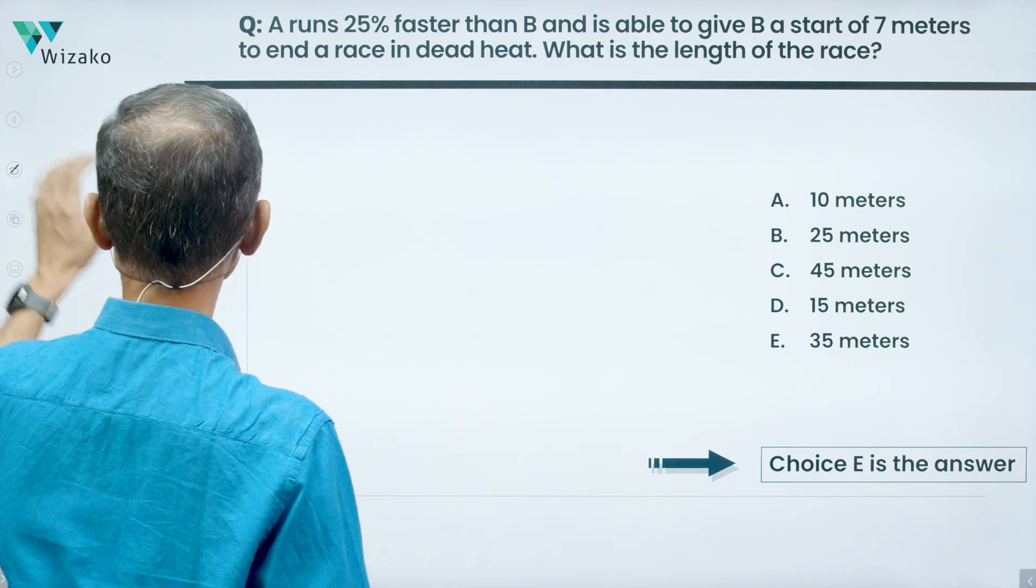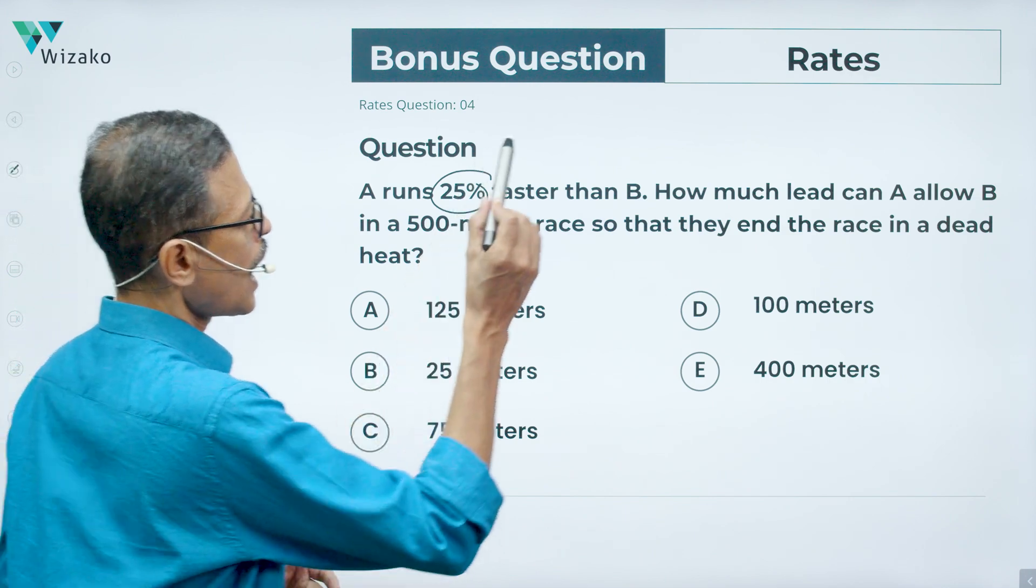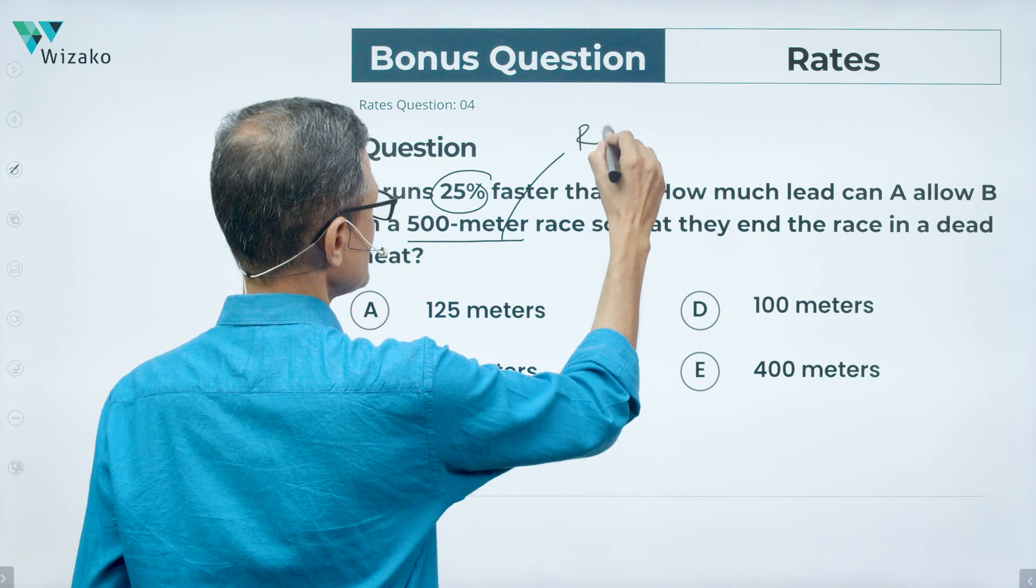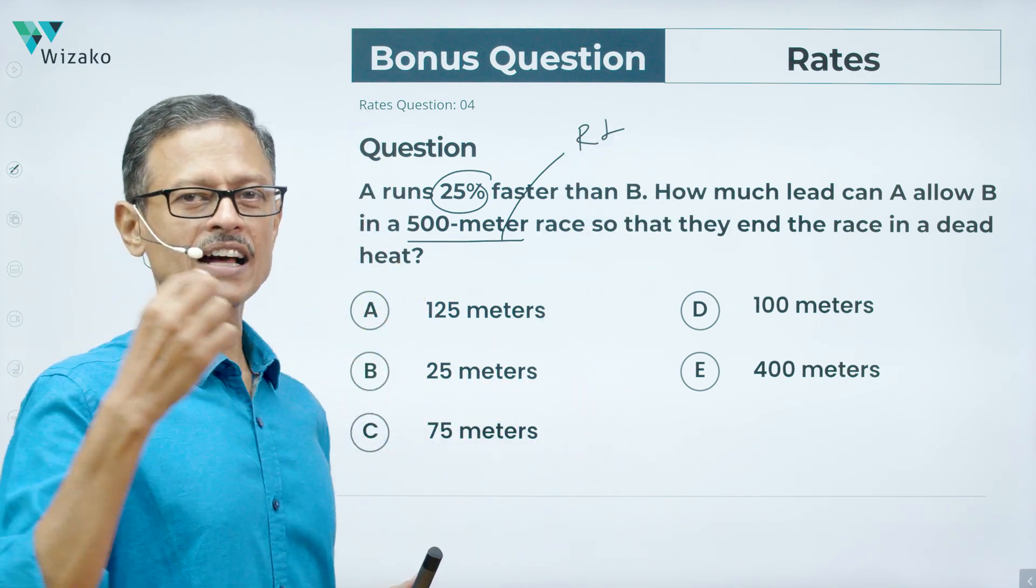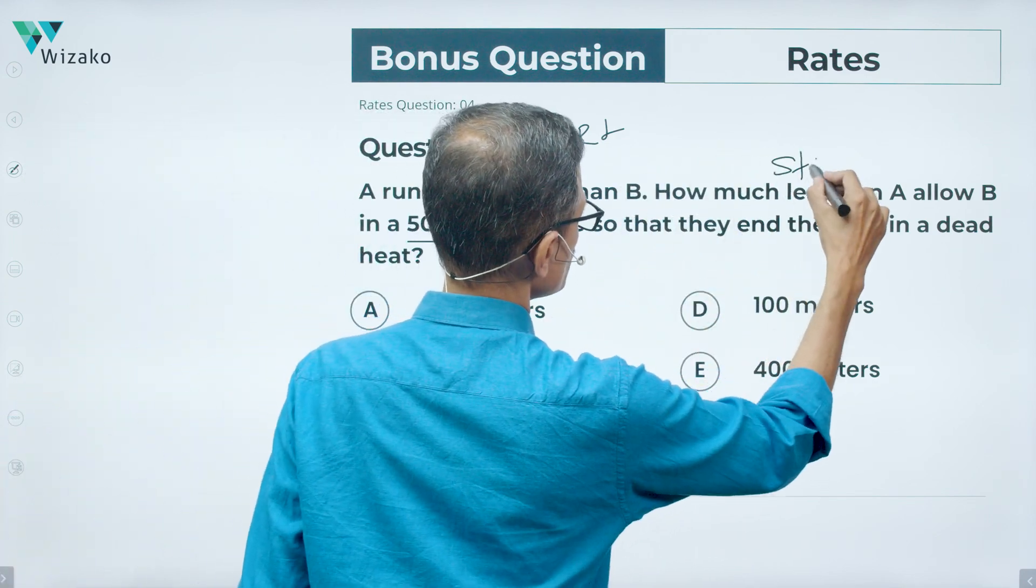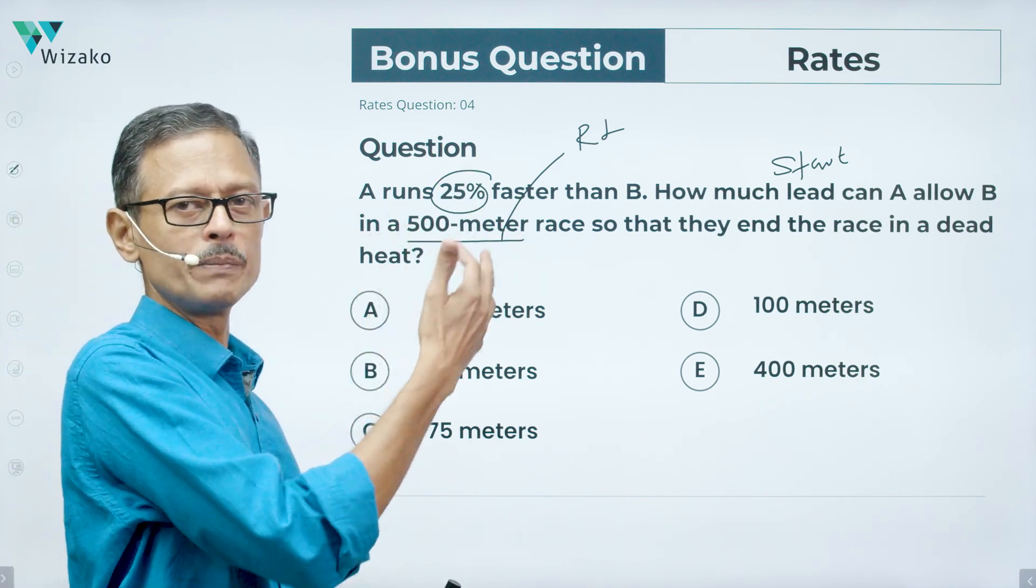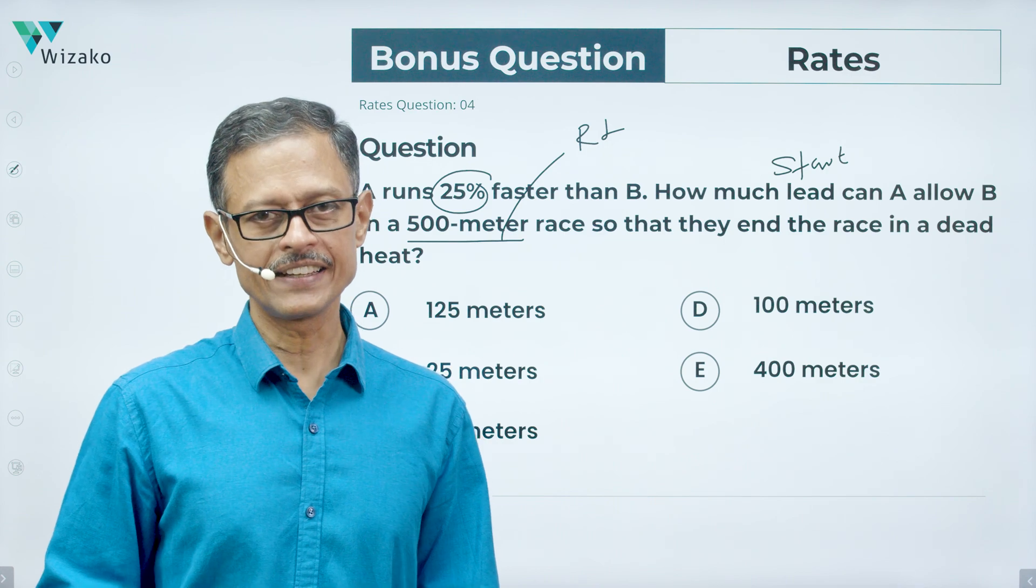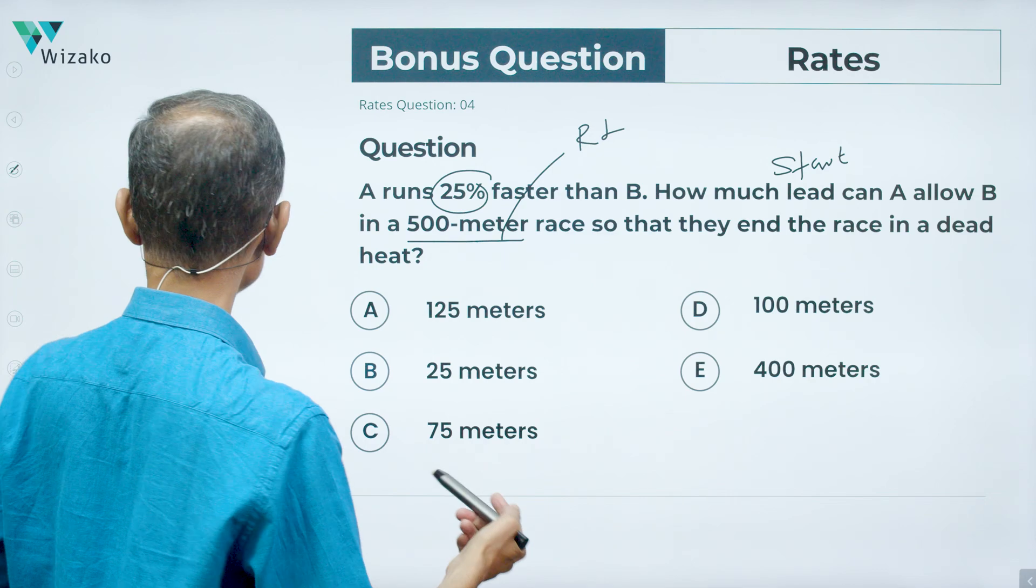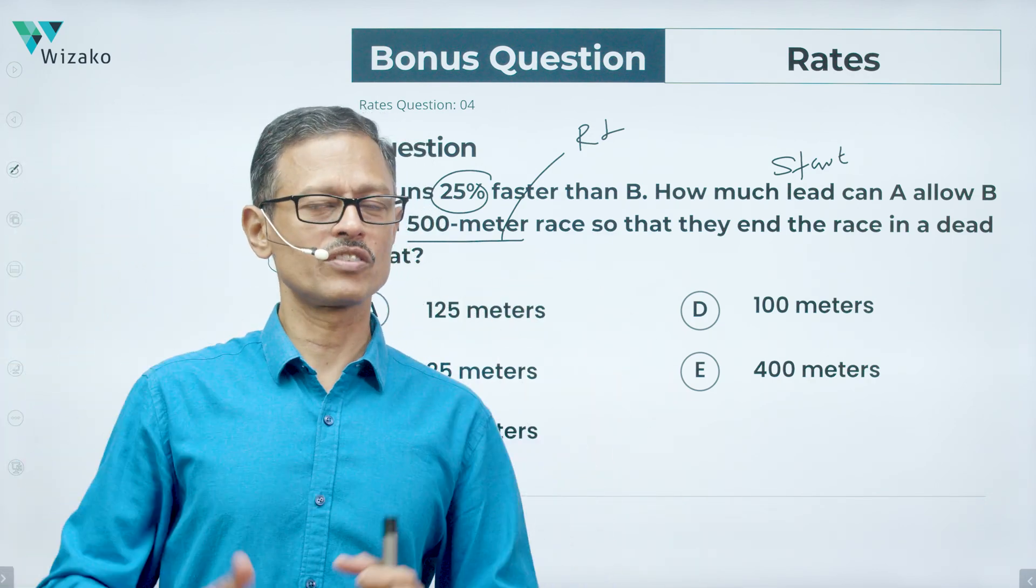As I mentioned, here is a bonus question. A runs 25% faster than B, no change there. How much lead can A allow B in a 500 meter race? The race length is given. In the original question that we solved, we were asked to compute the length of the race. Here the length of the race is given. The lead, the start is what is asked. So A runs 25% faster than B. How much start can A allow B in a 500 meter race so that they finish the race in a dead heat? Solve this question and post your answers in the comment section of this video.